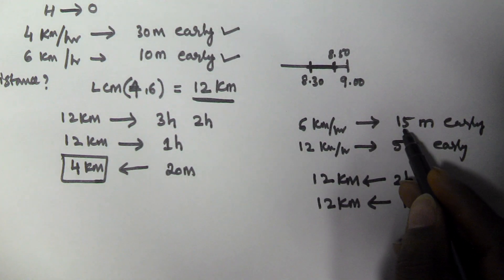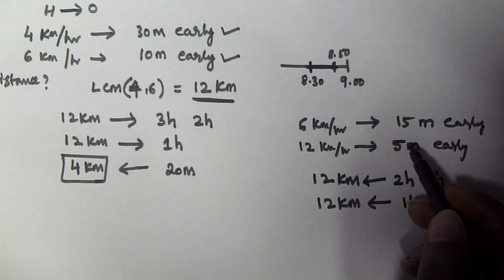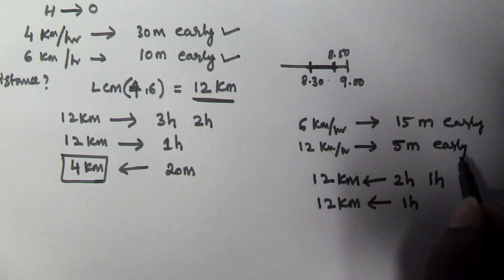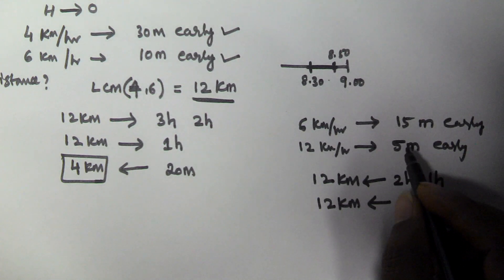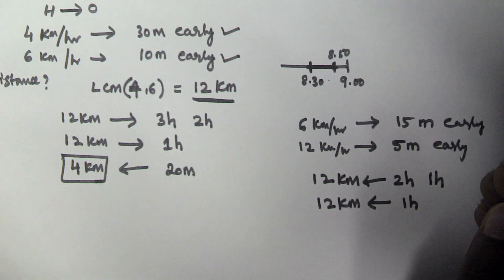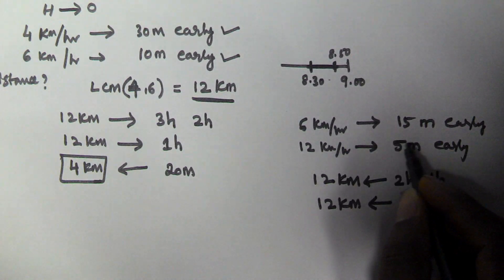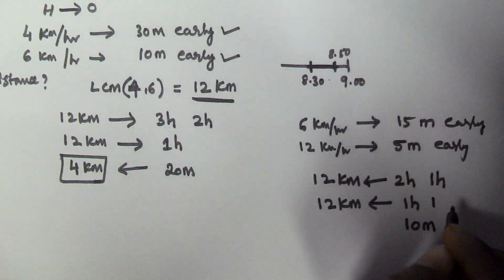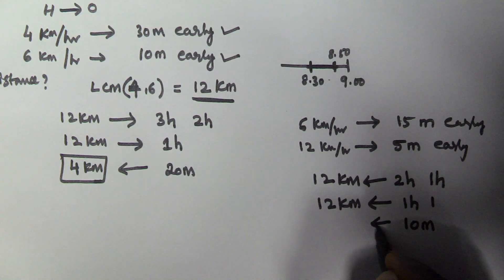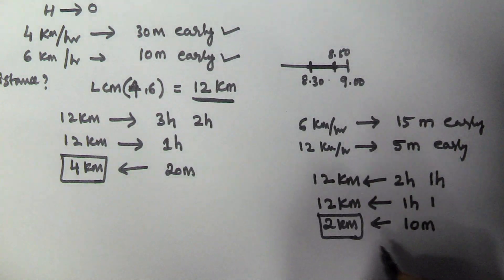On the first day he reached 15 minutes early and the second day 5 minutes early. Since both fall before the actual time, we subtract: the time difference is 10 minutes. The rule is: if both are on the same side — both early or both late — subtract them. If one is early and one is late, add them. Here the time difference is 10 minutes. Since 1 hour equals 12 km, 10 minutes gives us 2 km. So the actual distance between his home and office is 2 km.